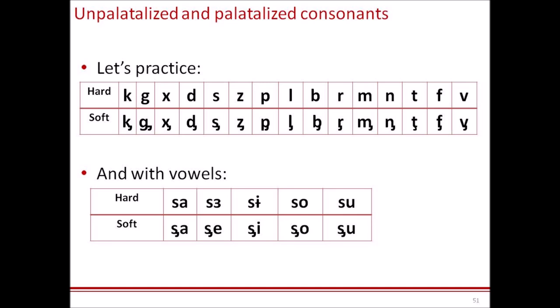Now let's practice with vowels. In IPA, soft consonants are marked with a small sign under each consonant. So if you have IPA phonetics for your song, you don't have to worry about figuring out which consonant is soft and which is hard — you can just read the phonetics and see it straight away.